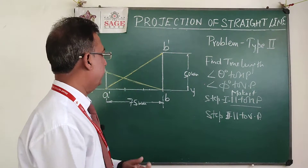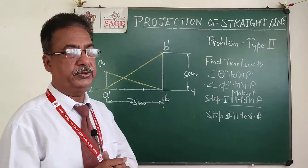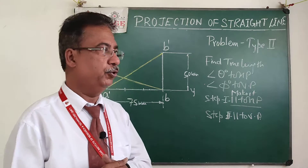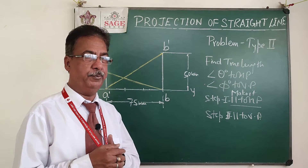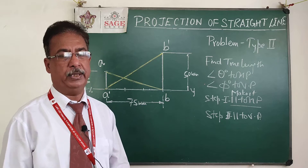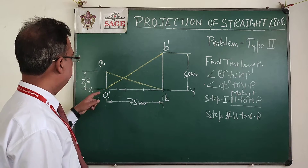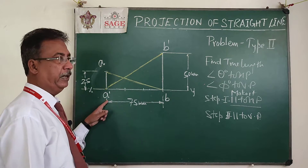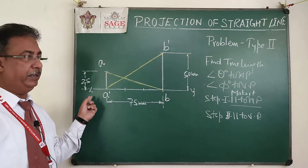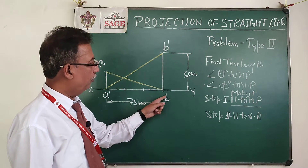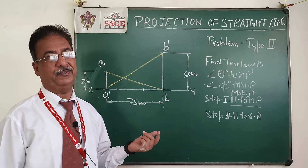Hello students, here is another problem — a very good problem on projection of a straight line, Type 2, where the final projections are given and we have to find the true length and true inclination of the line. End A will be on the HP and 25 mm behind VP; end B will be on the VP and above HP, and the distance between the projectors will be 75 mm.